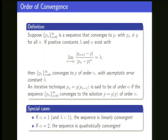Here's an important concept we started talking about last time: the order of convergence — not to be mixed up with rate of convergence, but of course trying to address the same thing, namely how quickly does a series converge to its limit. You have a sequence P_n that converges to P, and the question is how far you are from the limit at each step.